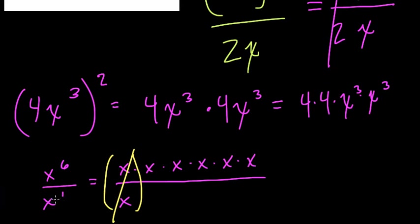So, essentially, we subtract 1 of the x's from 6 of the x's, and you can see what's left is x⁵, right? 1, 2, 3, 4, 5.